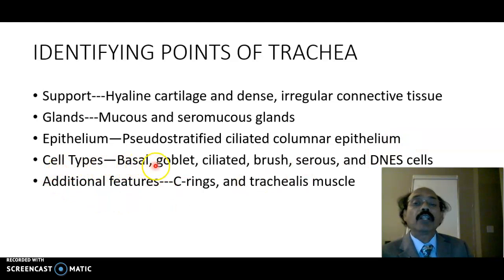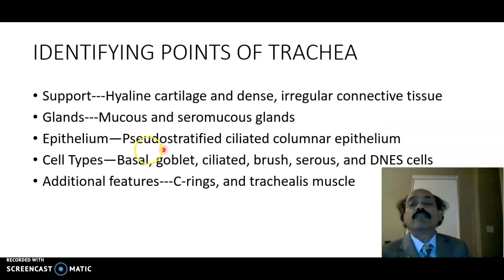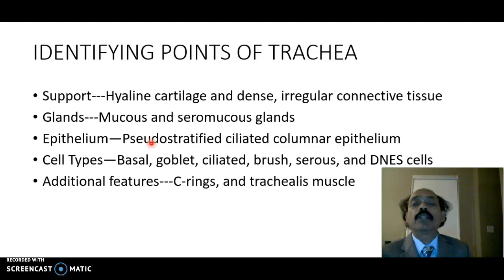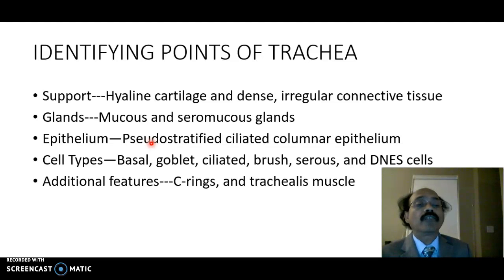The cell types present are: basal cell, goblet cell, ciliated cell, brush cell, serous cell, and DNES cell. These all cells are present in the pseudostratified ciliated columnar epithelium. It is called pseudostratified because it has only one layer, but the size of the cells are different and the location of the nucleus is at different levels. So it looks like a multi-layer, but in fact it is one layer of cells. All the cells touch the basement membrane, and the basement membrane is thick.